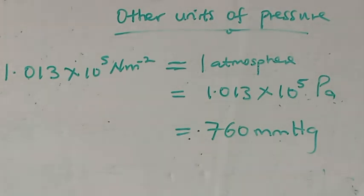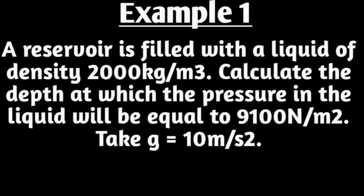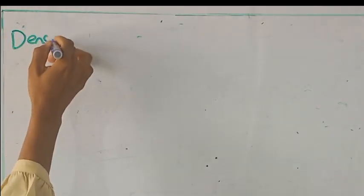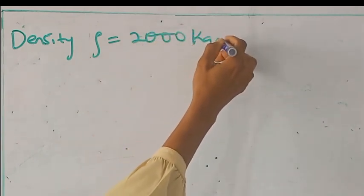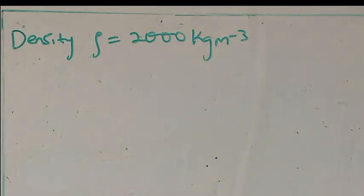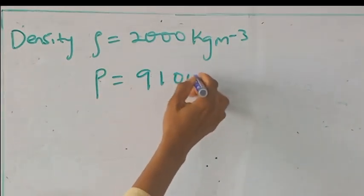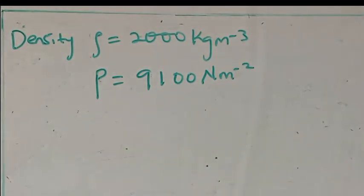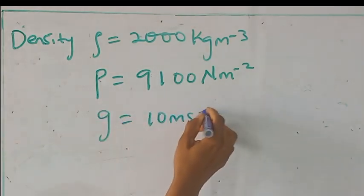Let's look at this example. A reservoir is filled with a liquid of density 2000 kg per meter cube. Calculate the depth at which the pressure in the liquid will be equal to 9,100 newton per meter square. Let's write out all that we have been given. Density, rho, we have it as 2,000 kg per meter cube. Pressure P as 9,100 newton per meter square, g as 10 meters per second square.